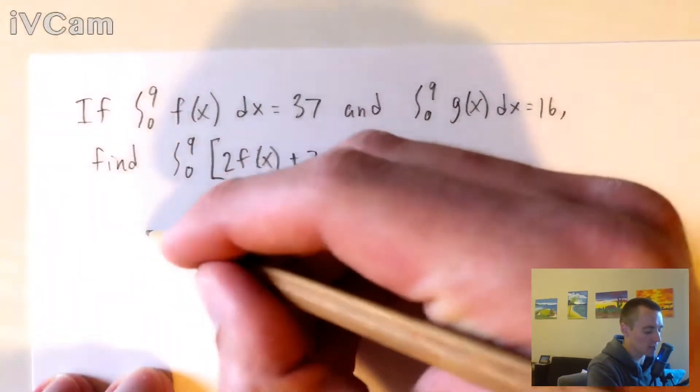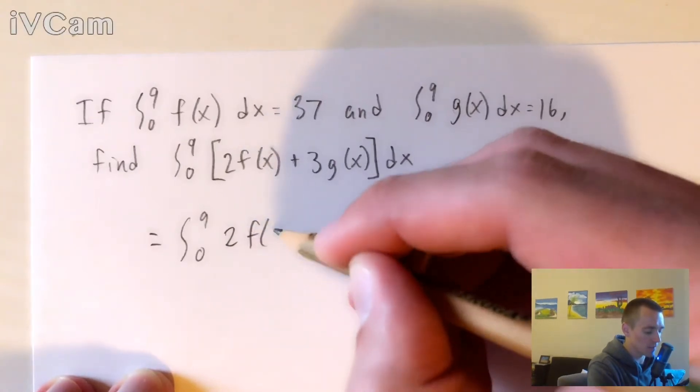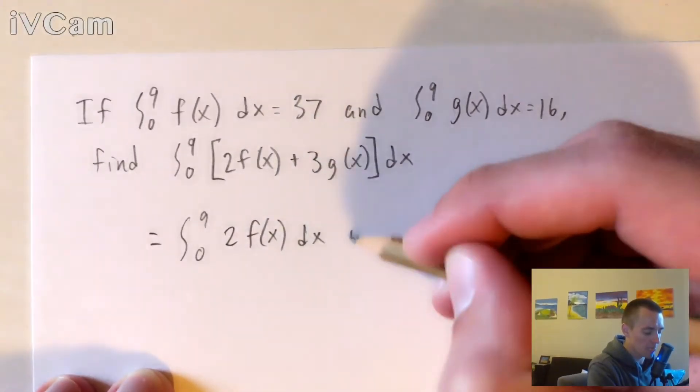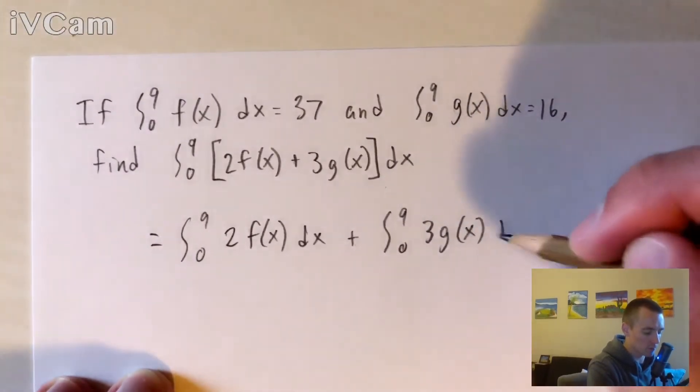So we can actually break this down into the integral from zero to nine of two times f(x) dx, plus the integral from zero to nine of three times g(x), with respect to x.